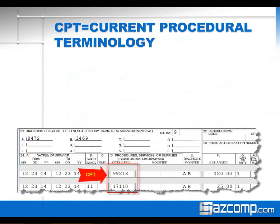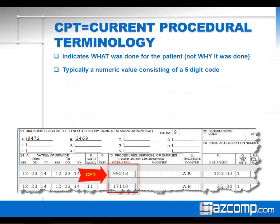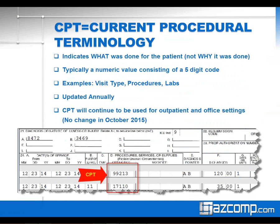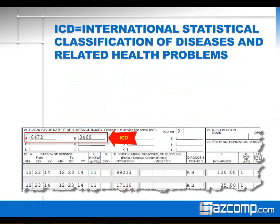A little bit of terminology. The first thing is CPT, which stands for Current Procedural Terminology. It indicates what was done for the patient, not why it was done. It's typically a five-digit numeric code found on your claims — examples would be the visit type, procedures, or labs. CPT codes are updated annually; however, there will be no significant change to them in October 2015, so you'll continue to use the CPT codes you do today.